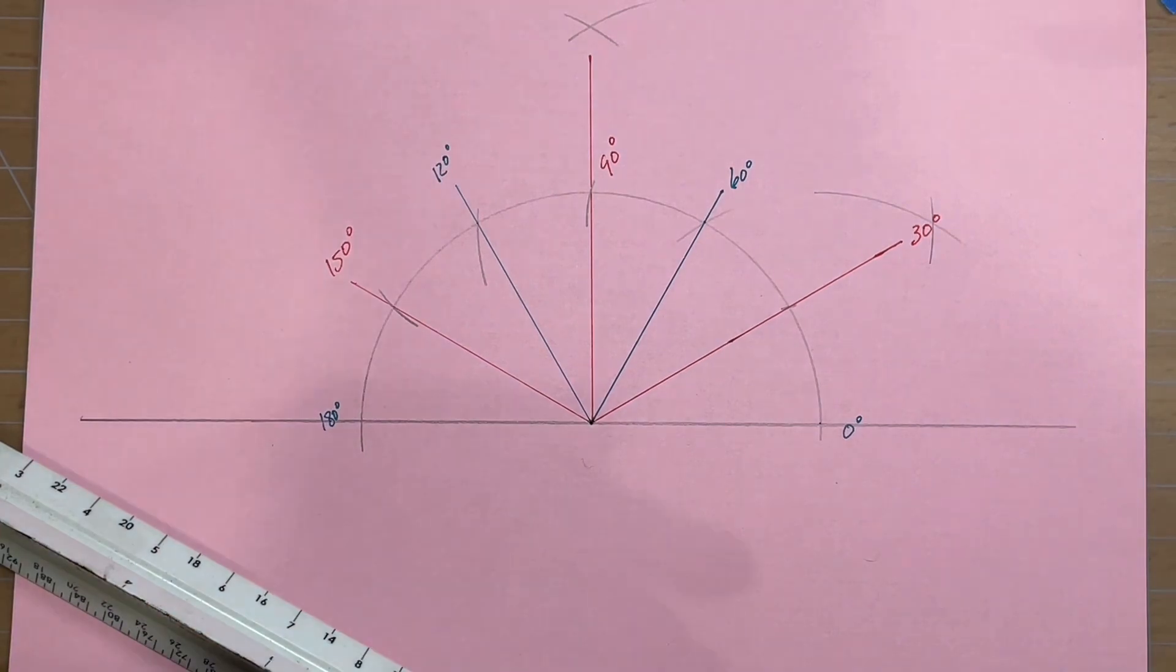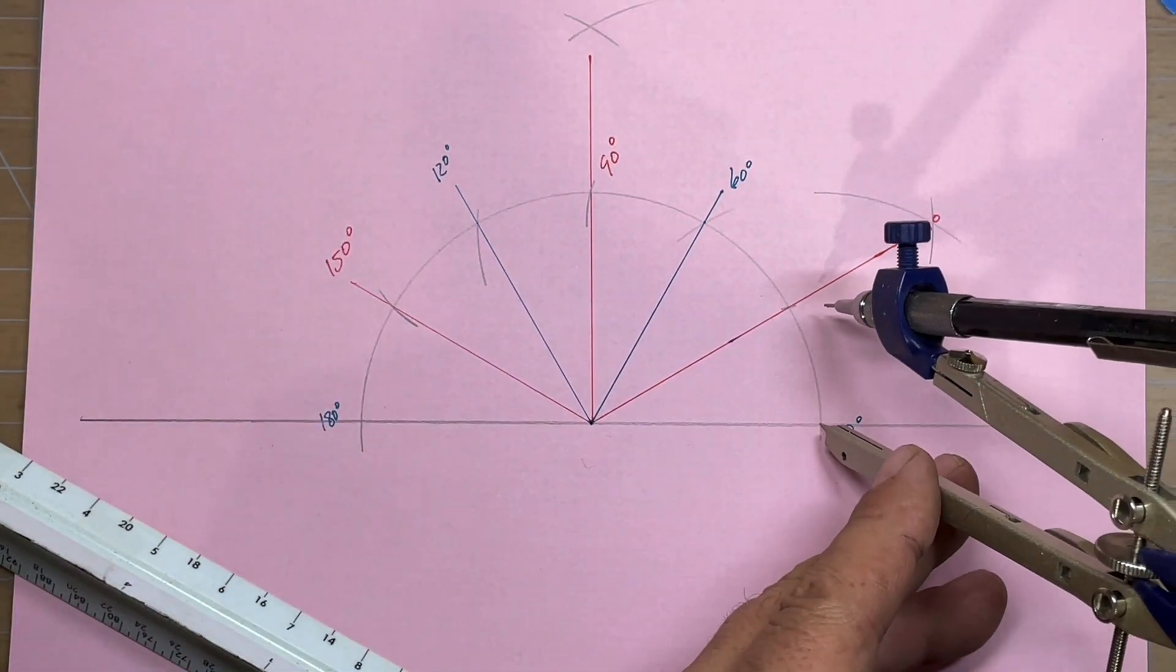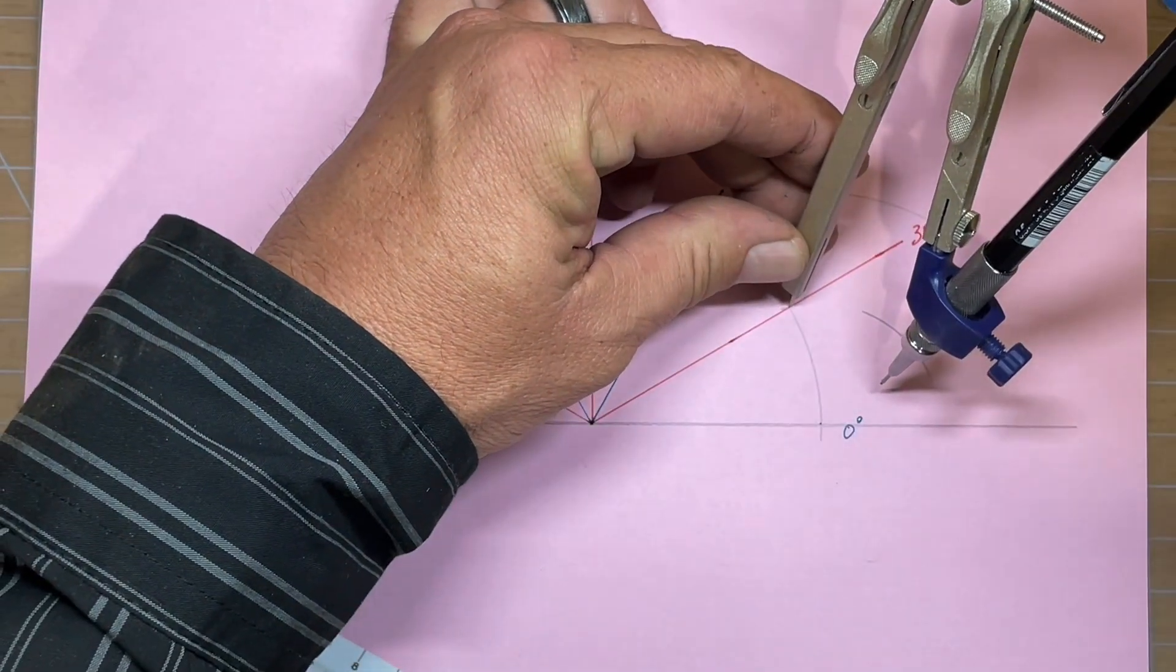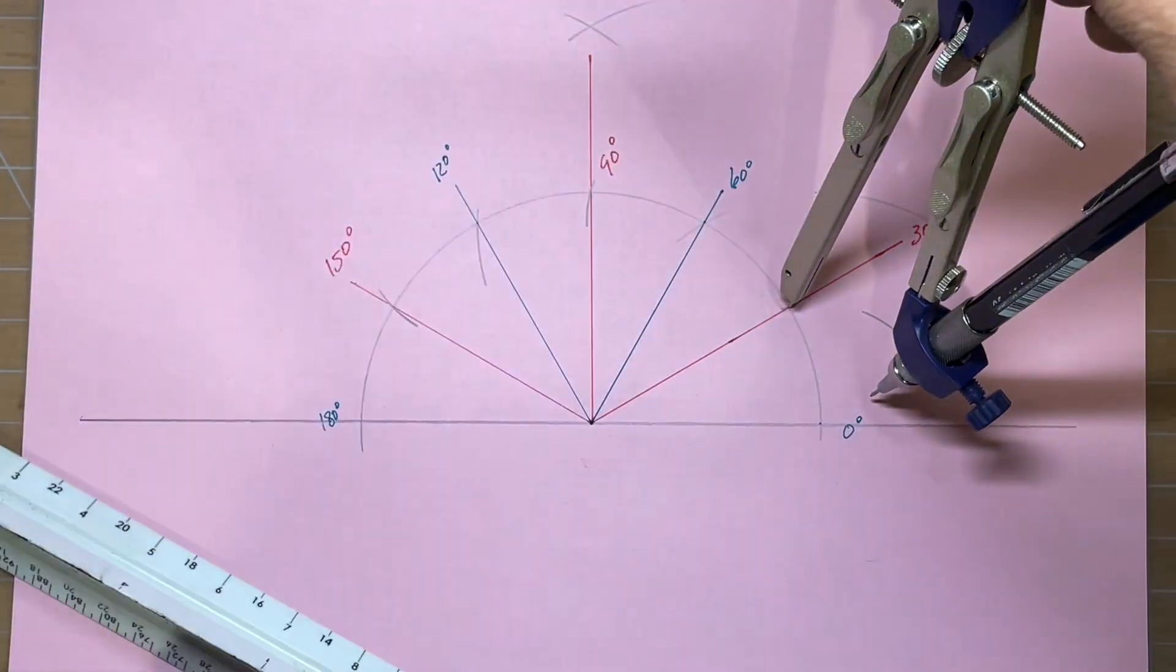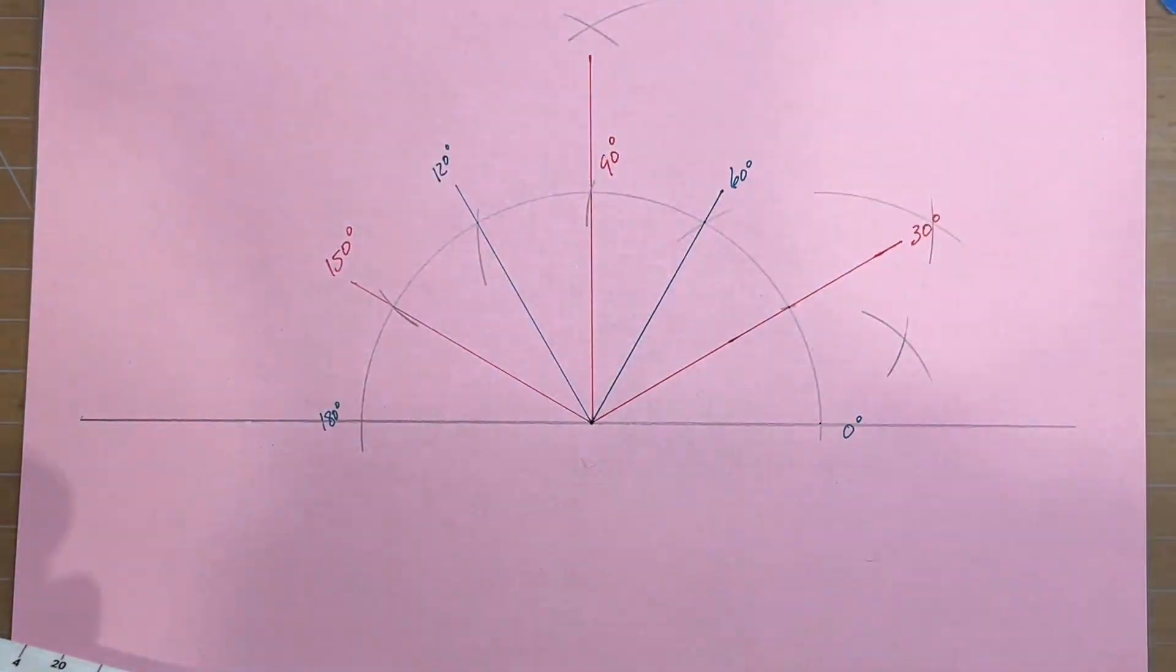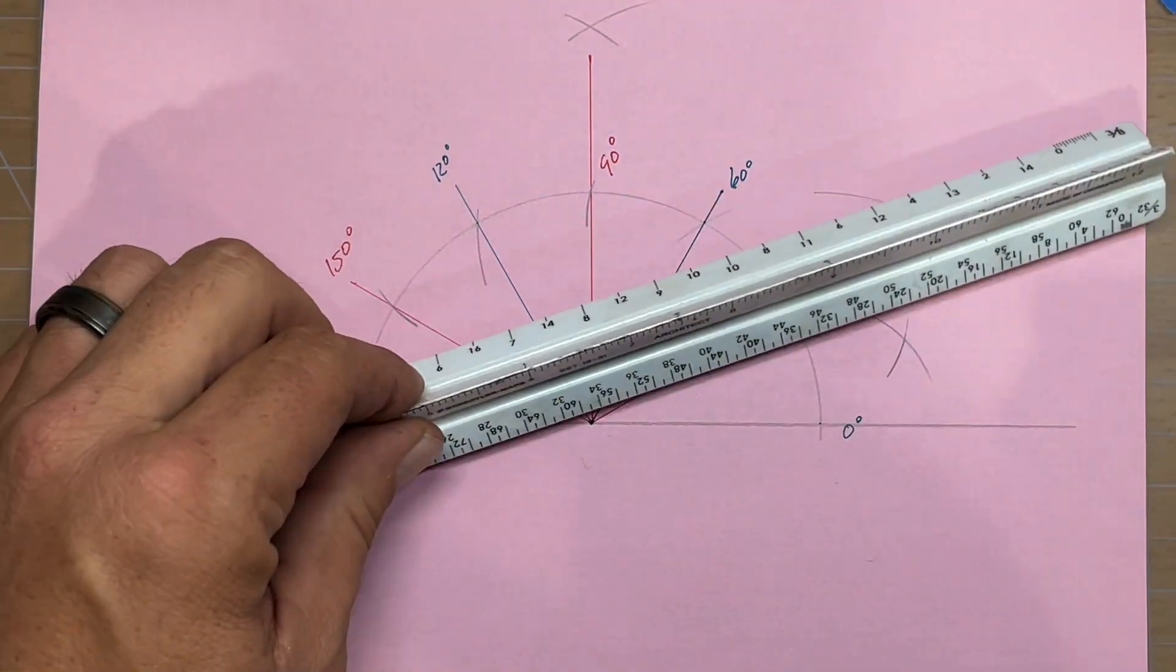Now we can take our compass again, and again we're going to bisect. Now we'll bisect our 30 degree angle. We'll keep our compass in the same position, move over, set our point here. I'm off just a touch there, we'll reset that. And now we have bisected the 30 degree, which will give us 15 degrees.